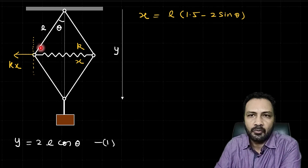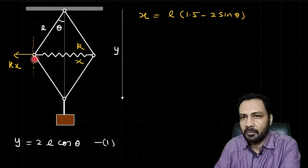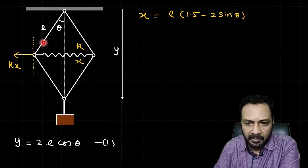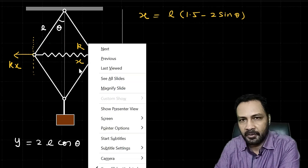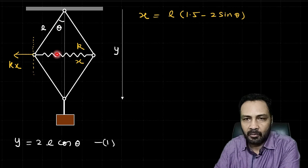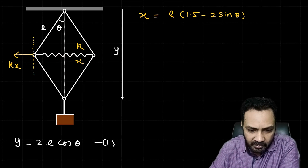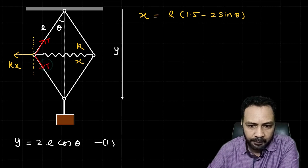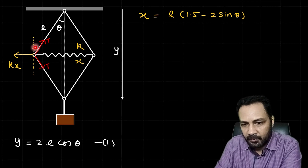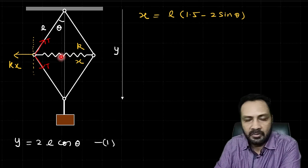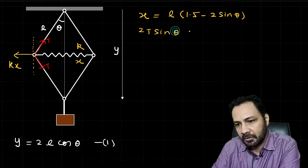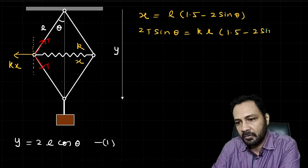Let the tension in each rod be T (by symmetry all four rod tensions are equal). Balancing forces horizontally at hinge B or D: the horizontal spring force equals the horizontal components of the two rod tensions meeting there. So 2T sinθ = Kx = K · L(1.5 − 2sinθ).